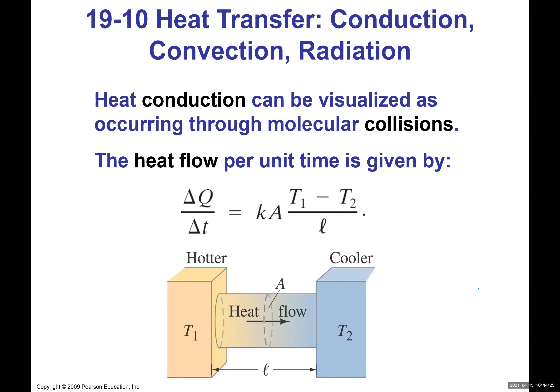The last topic in this chapter is the mechanisms of heat transfer. We can transfer heat from one object or system to another, but we haven't discussed exactly how. There are three different mechanisms: conduction, convection, and radiation. We'll look at how each differs and calculate the rate at which energy is transferred — the heat flow — for each.